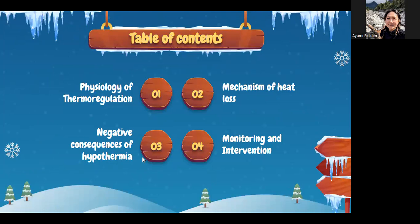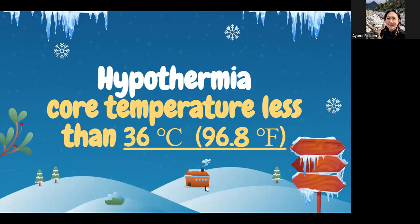We're going to talk about the physiology of thermoregulation, how we lose heat, and the negative consequences of hypothermia, and finally monitoring and intervention. Hypothermia is defined as core temperature less than 36 degrees Celsius — a very important number. 36 degrees Celsius equals 96.8 Fahrenheit. You may have worked in the PACU where a preceptor looks for at least 96.8, but we'll discuss whether that is best practice.